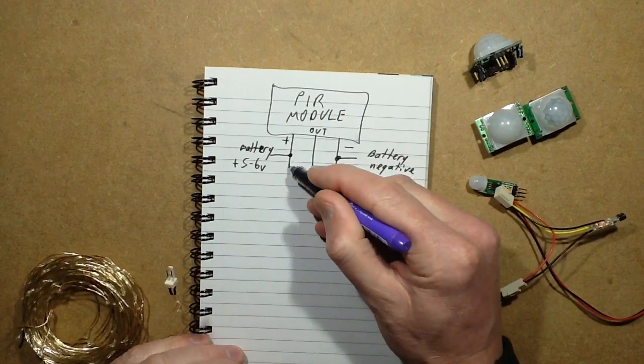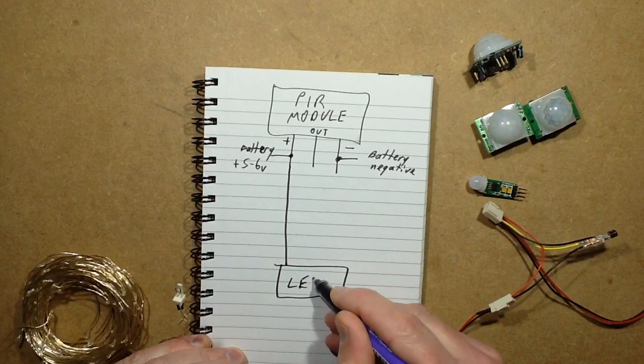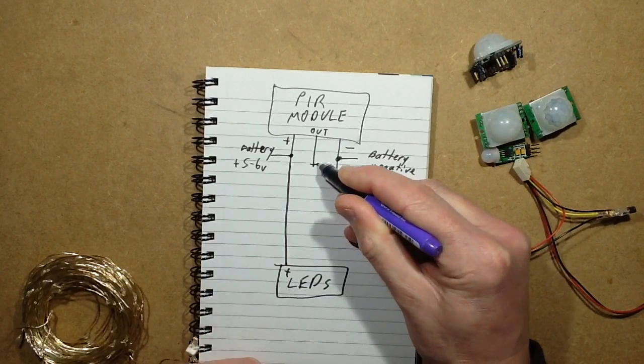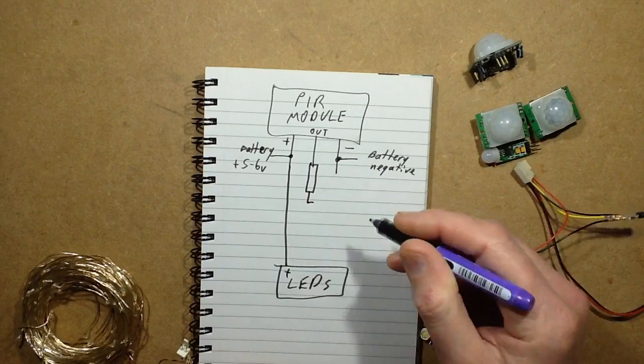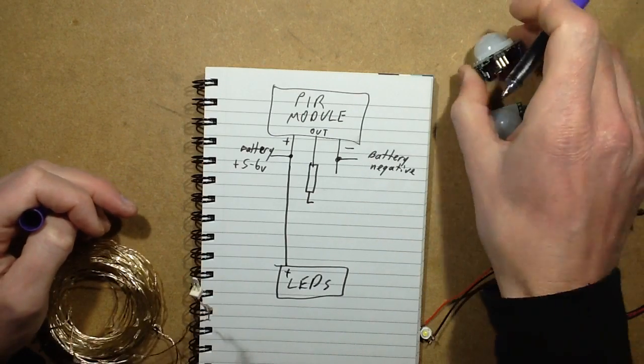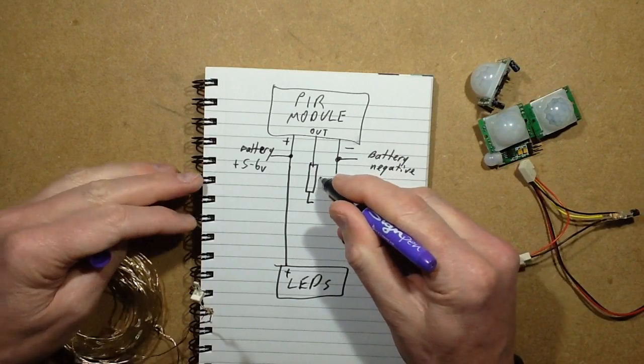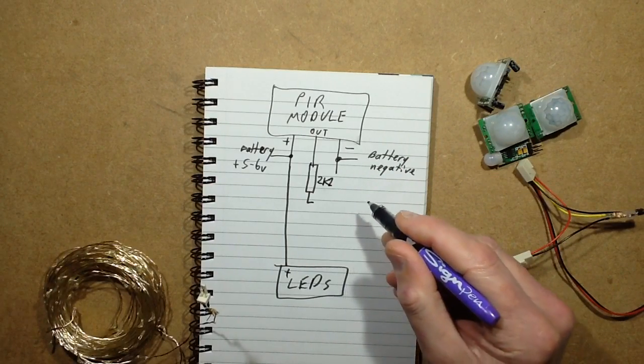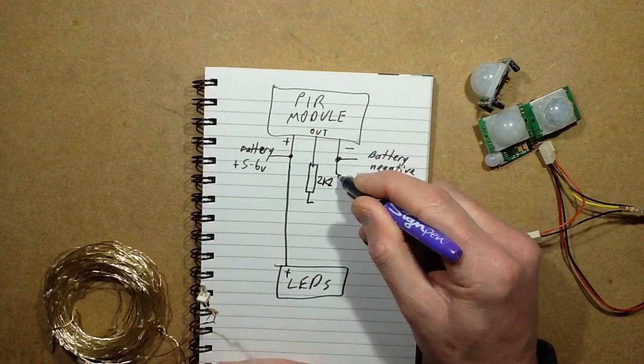So here we get the module. We're going to take the positive out to the LEDs directly. The output is going to go via a resistor to limit the current into the base of the transistor, partly to protect the transistor and partly because you don't want to load this chip up too much to ensure it's as stable as possible. I chose a resistor value of 2k2, which the colour code for it is red, red, red - just nice and easy to remember.